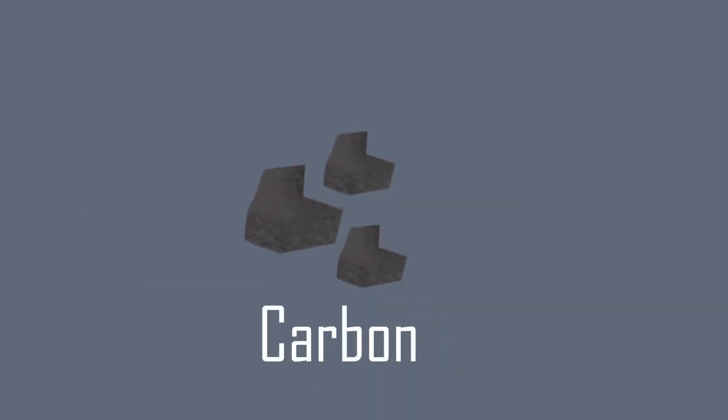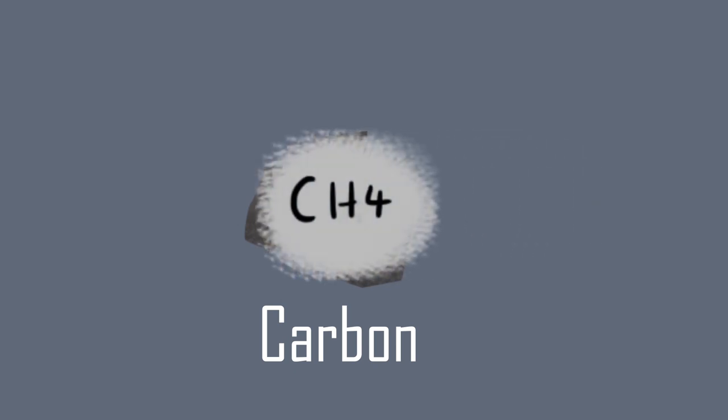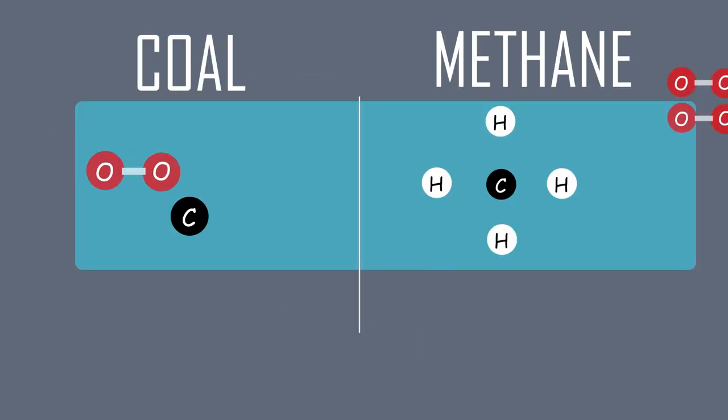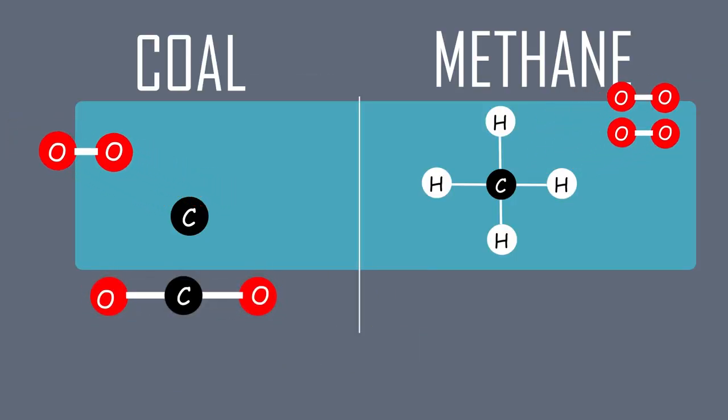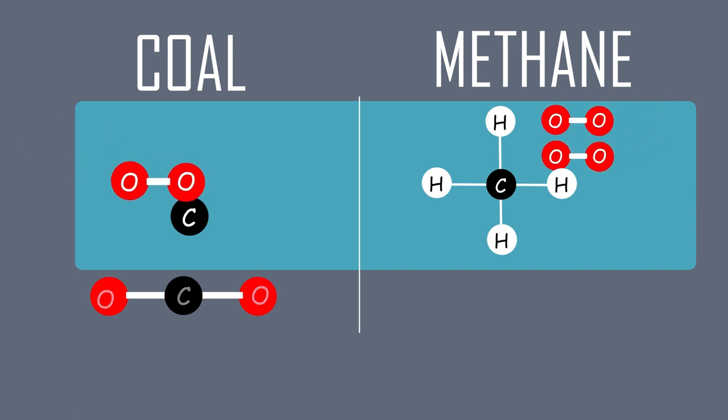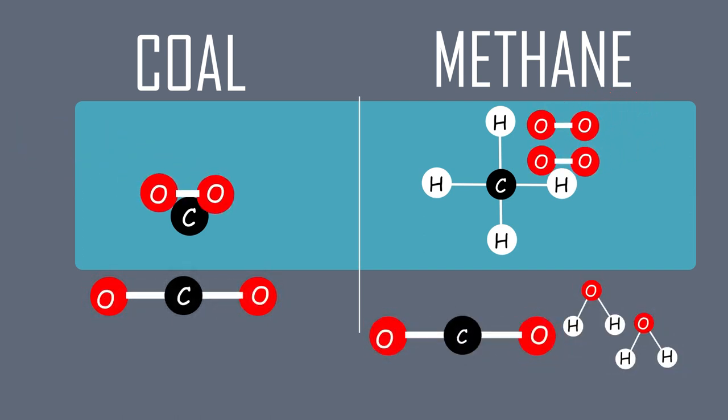If we replace coal, which is almost pure carbon, by natural gas, which is methane CH4, as a fuel for electricity generation, half the oxygen used will join with hydrogen rather than carbon, so our emissions of carbon dioxide will be halved. This is the argument given for developing so-called fracking for natural gas, which would replace coal in power stations.